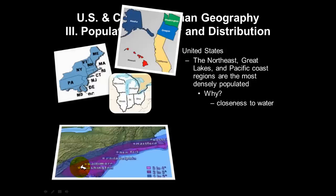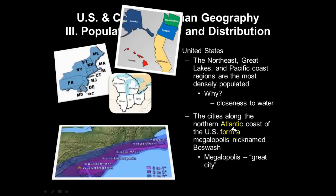The major cities along the East Coast are some of the oldest and largest cities in the United States — still where our population centers and wealth are concentrated. Going from Washington D.C., Baltimore, Philadelphia, New York, Boston, to Hartford, Connecticut, they actually form one major megapolis. Some geographers say the cities along the northern Atlantic coast of the US form a megapolis nicknamed 'BosWash.'